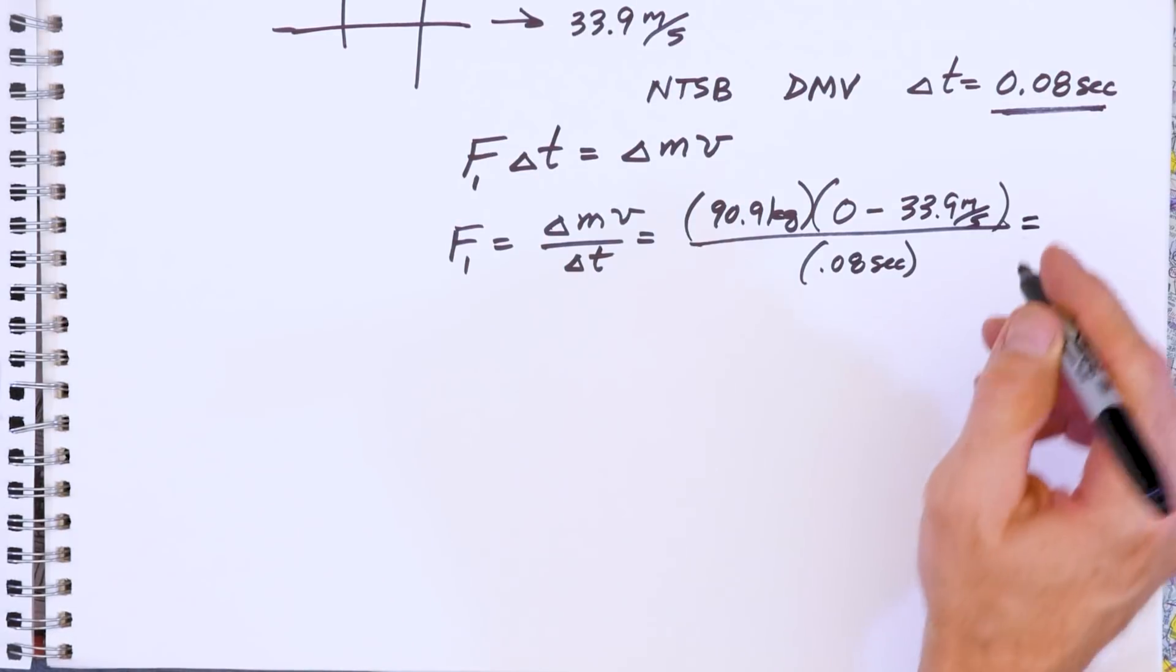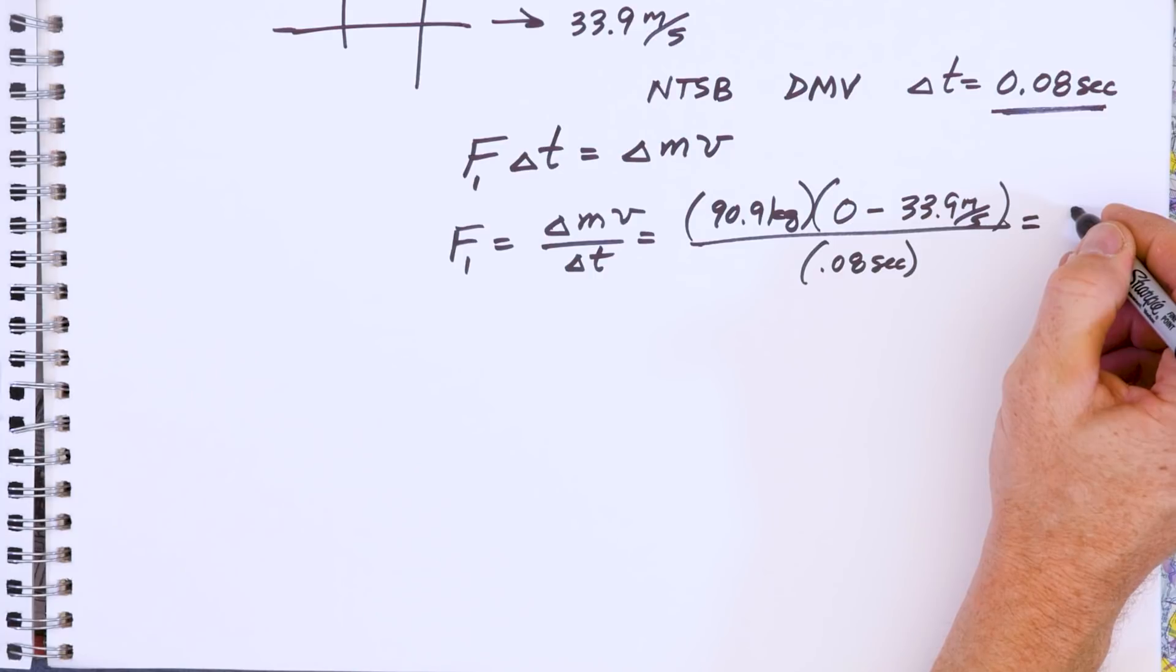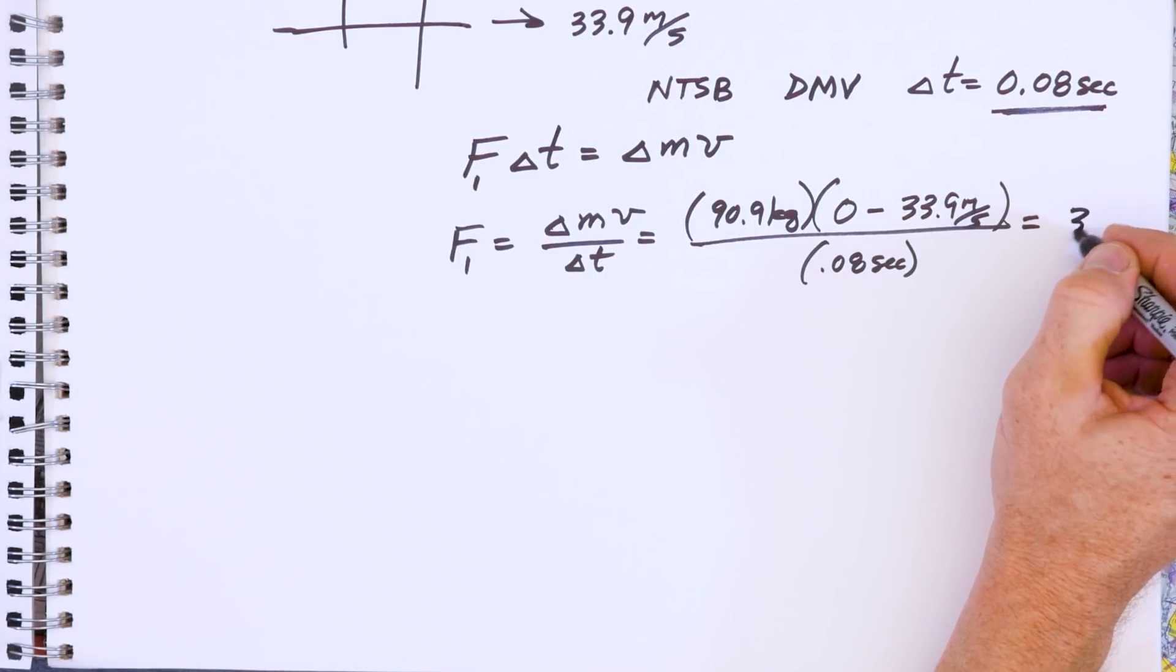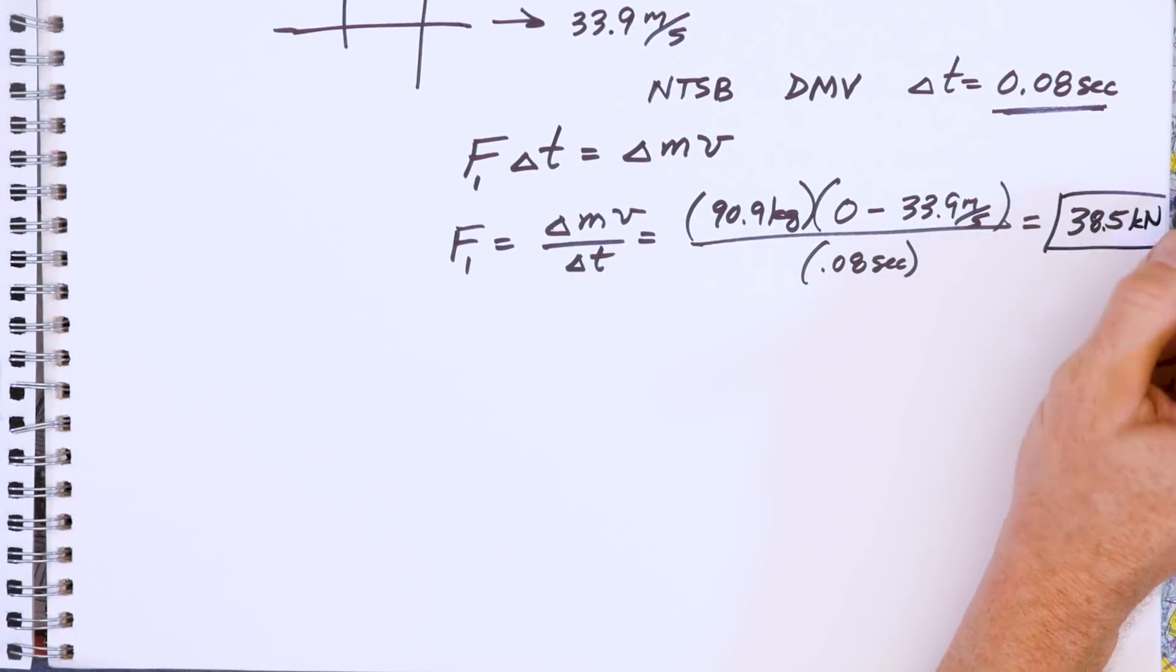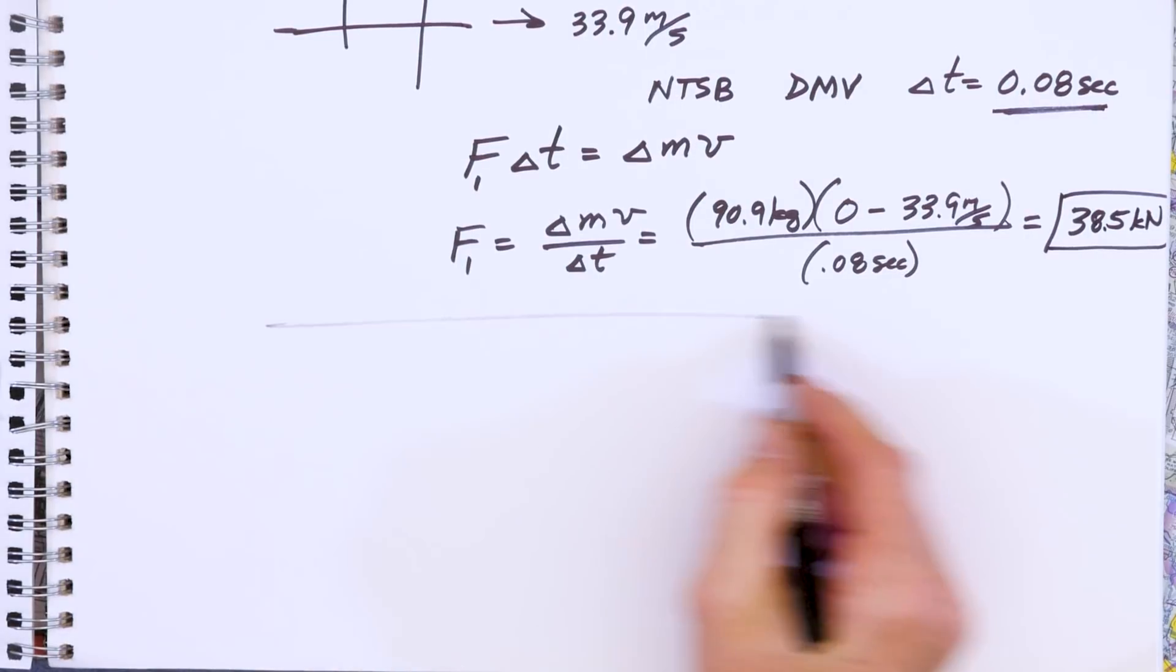And when we do this, we end up getting 11,700 newtons or, oh, excuse me, 38.5. I was looking ahead of my notes, 38.5 kilonewtons of force. So this is the force throwing you into the yoke.